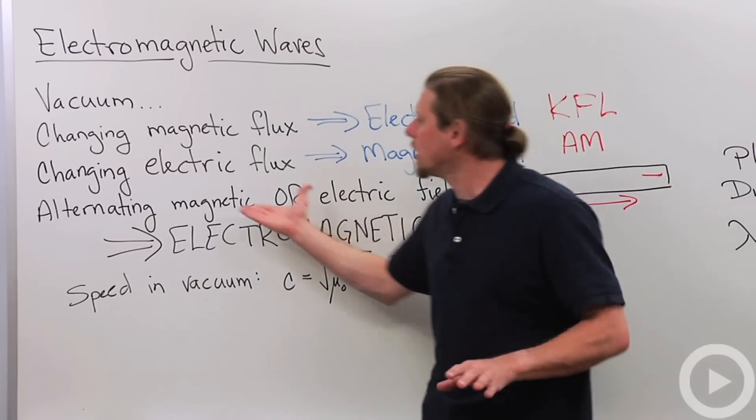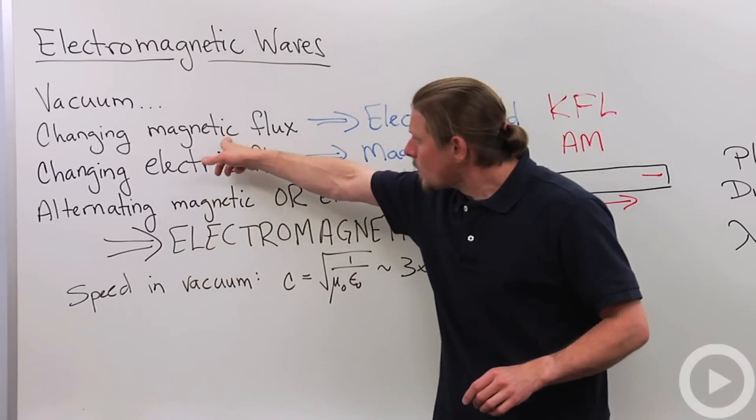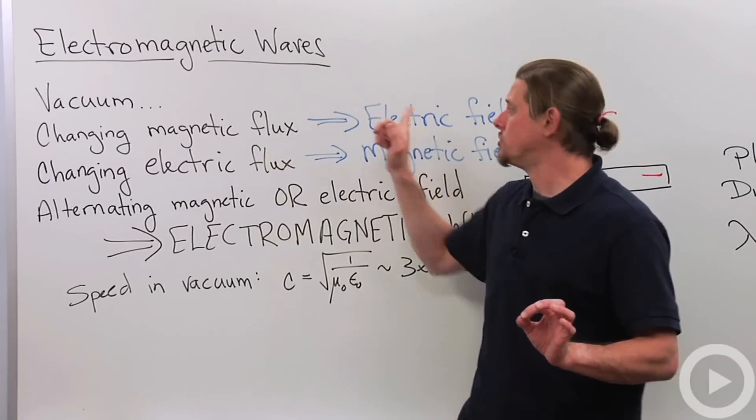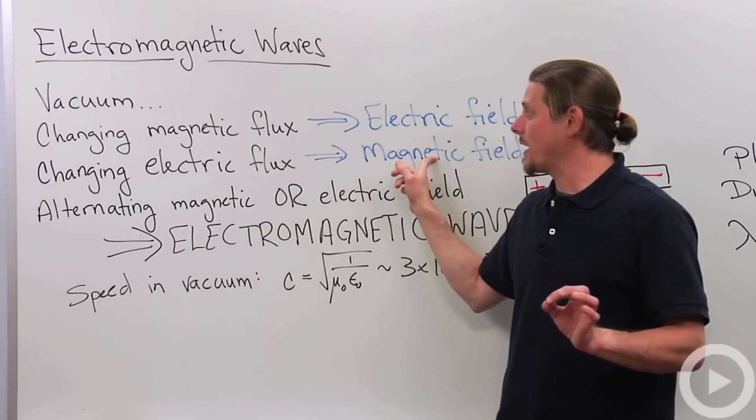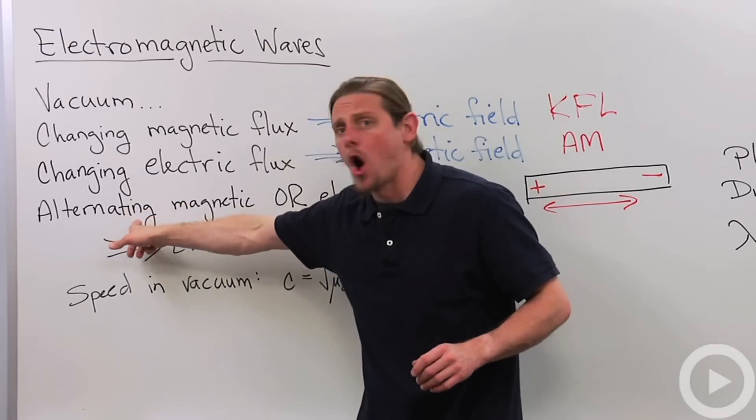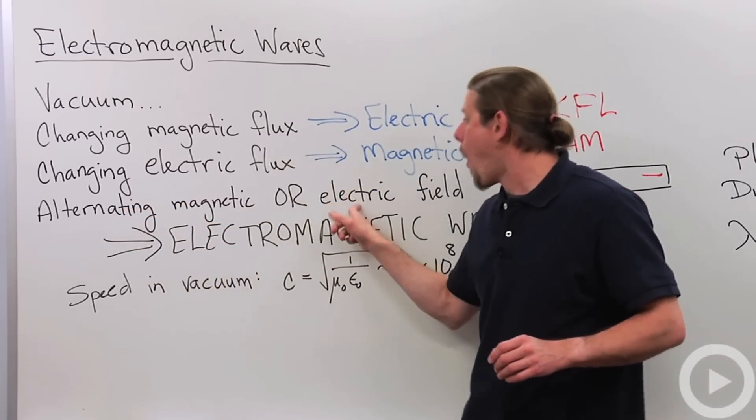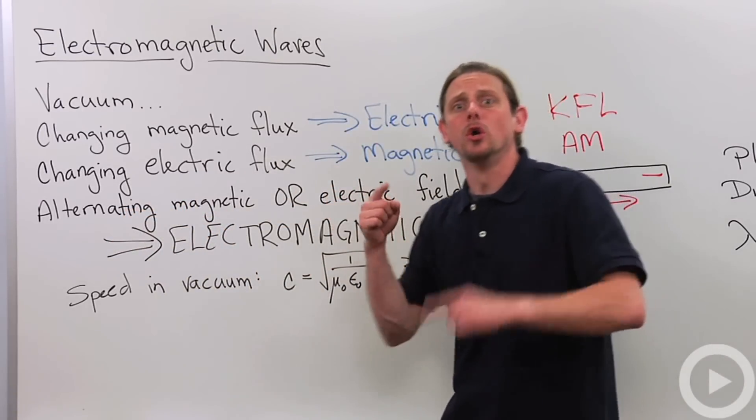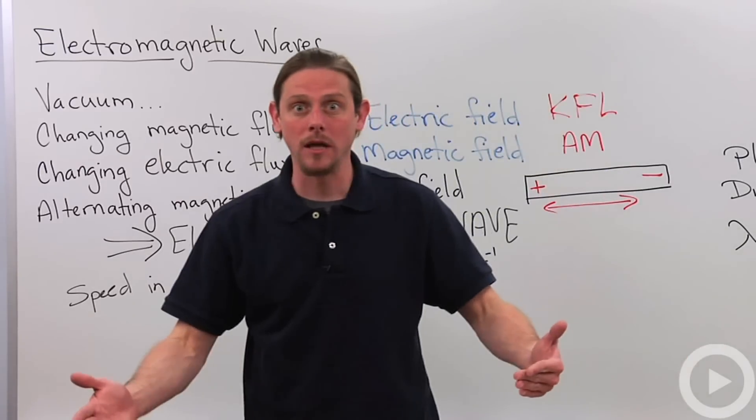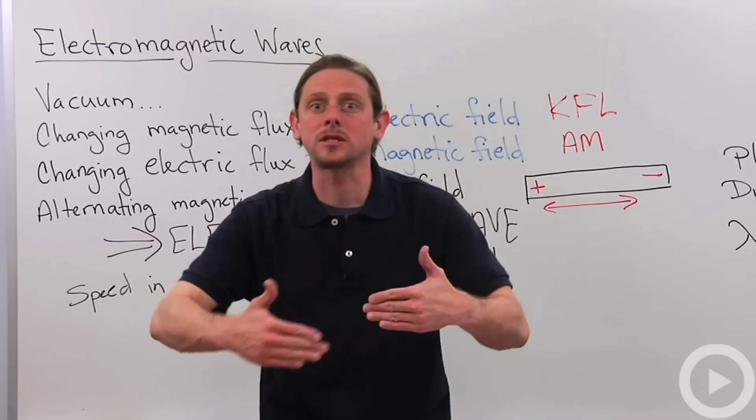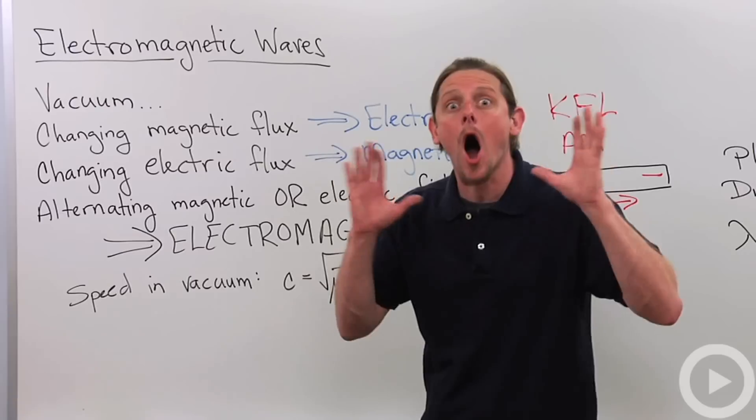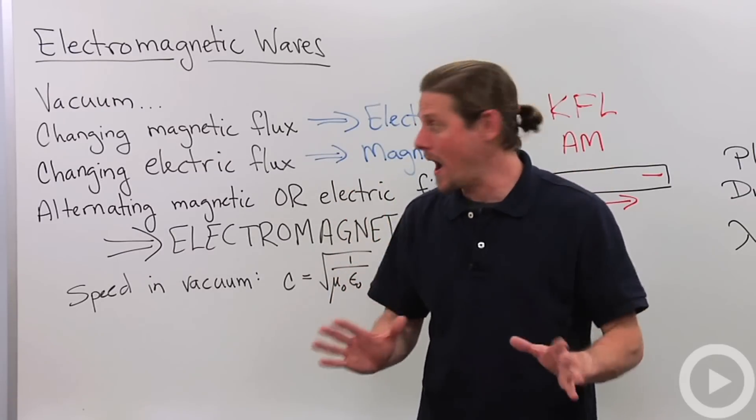But anyway what it also does is it says that when you change a magnetic field you generate an electric field. You change an electric field you generate a magnetic field. So what that does is it says that any time you've got an alternating magnetic or electric field you'll generate the other one and then that thing that you just generated will generate the other guy again. And so it just kind of propagates away from there in the form of a wave an electromagnetic wave.